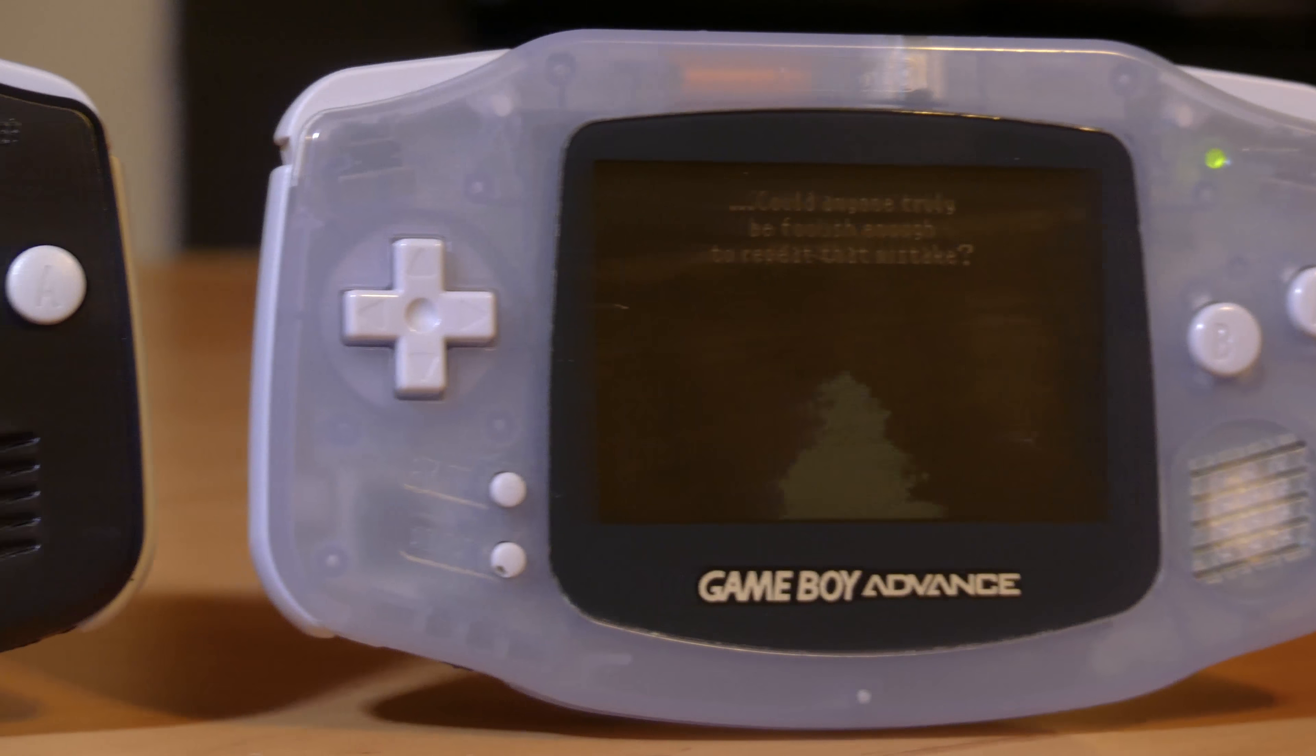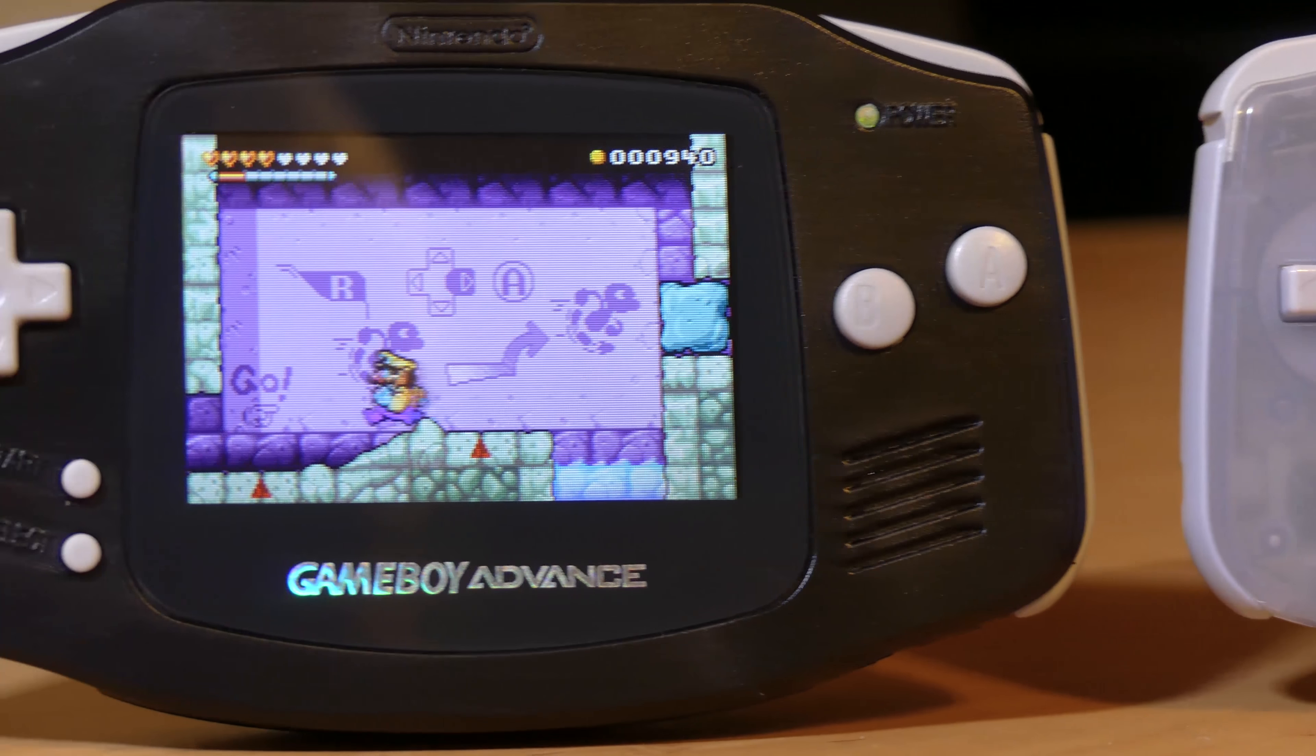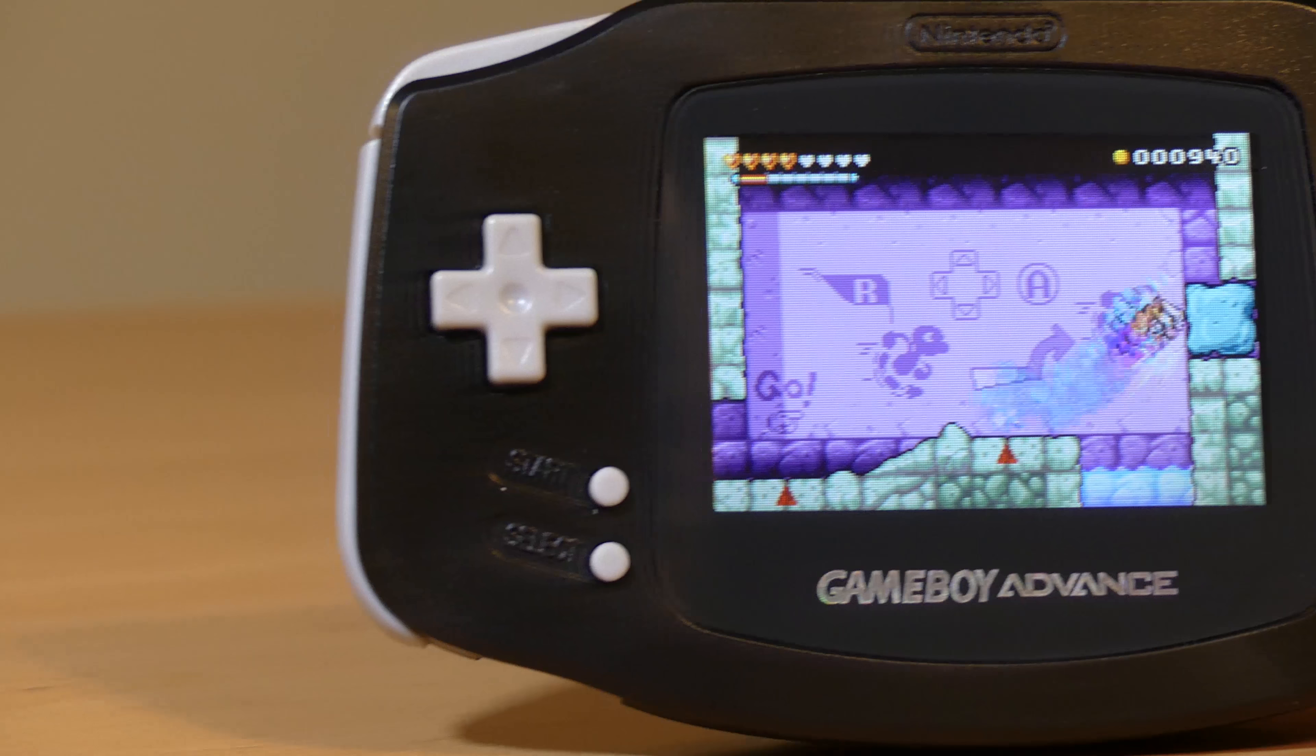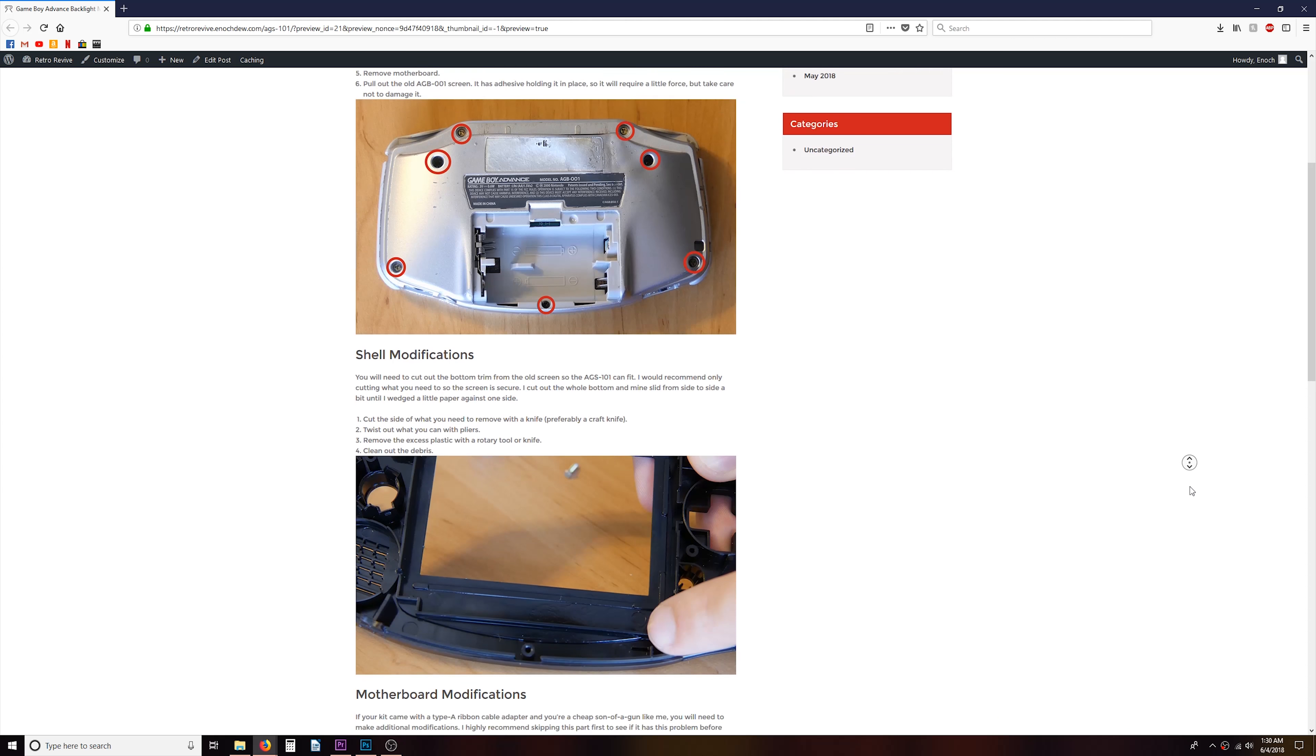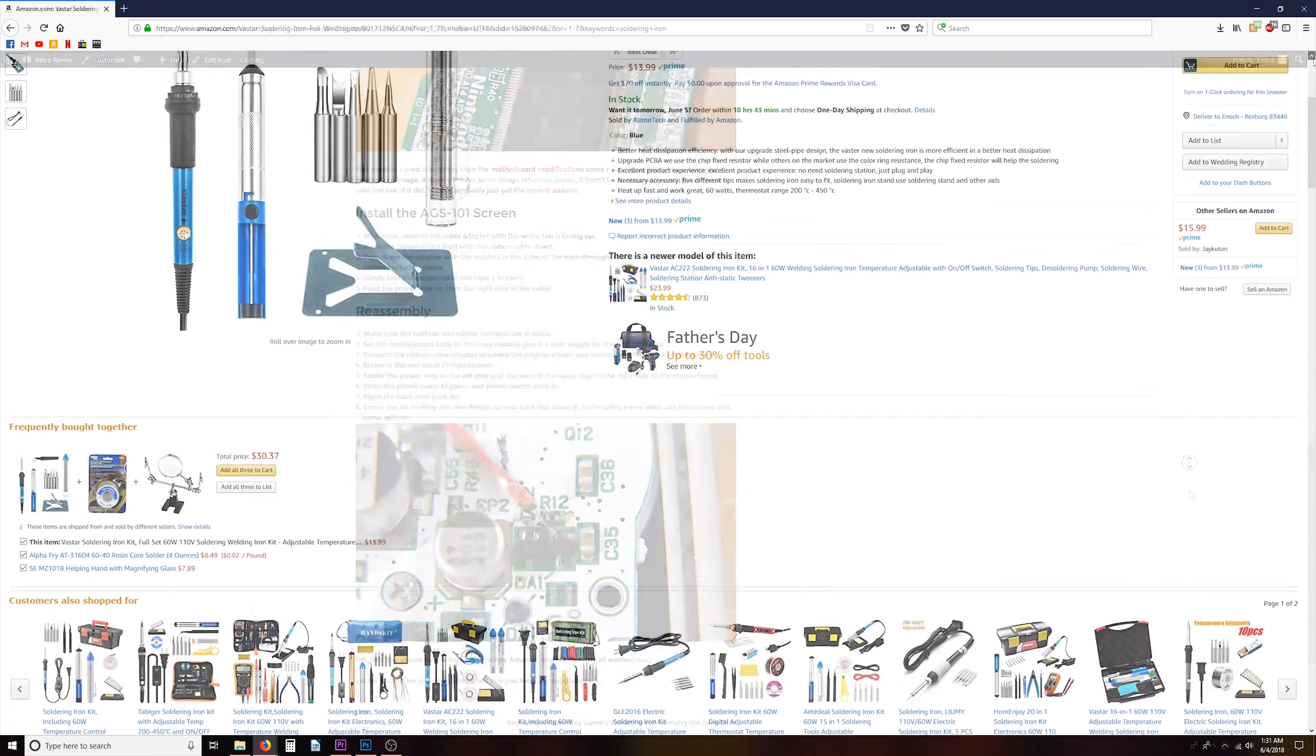With all that done, you should have a backlit original Game Boy Advance that isn't all washed out. In the description I've included a link to my blog that includes a step-by-step guide on how to complete this mod, as well as links to any tools that I used during it. Let me know how this mod turned out for you, or if you have any suggestions, leave them in the comments below.